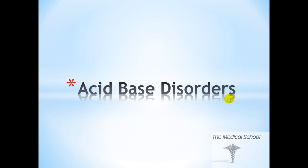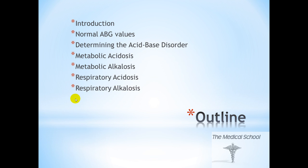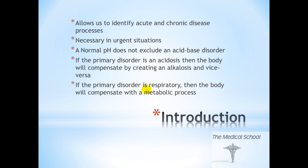Hey, this is Rhys from The Medical School and today we're going to talk about acid-base disorders. We're going to break down this seemingly complex topic into simple concepts so that you'll be able to tackle any problem that comes your way. Here's the outline for today's discussion: a brief introduction, normal ABG values, the step-by-step approach to determining an acid-base disorder, metabolic acidosis, metabolic alkalosis, respiratory acidosis, and respiratory alkalosis. Hopefully by the end you'll be able to figure out any acid-base disorder.